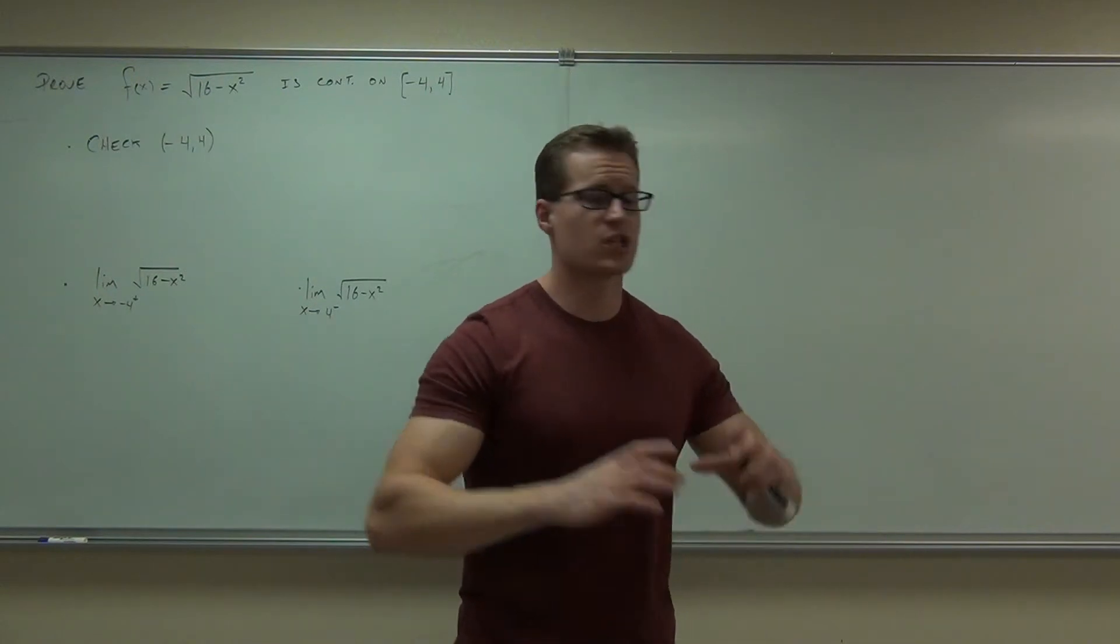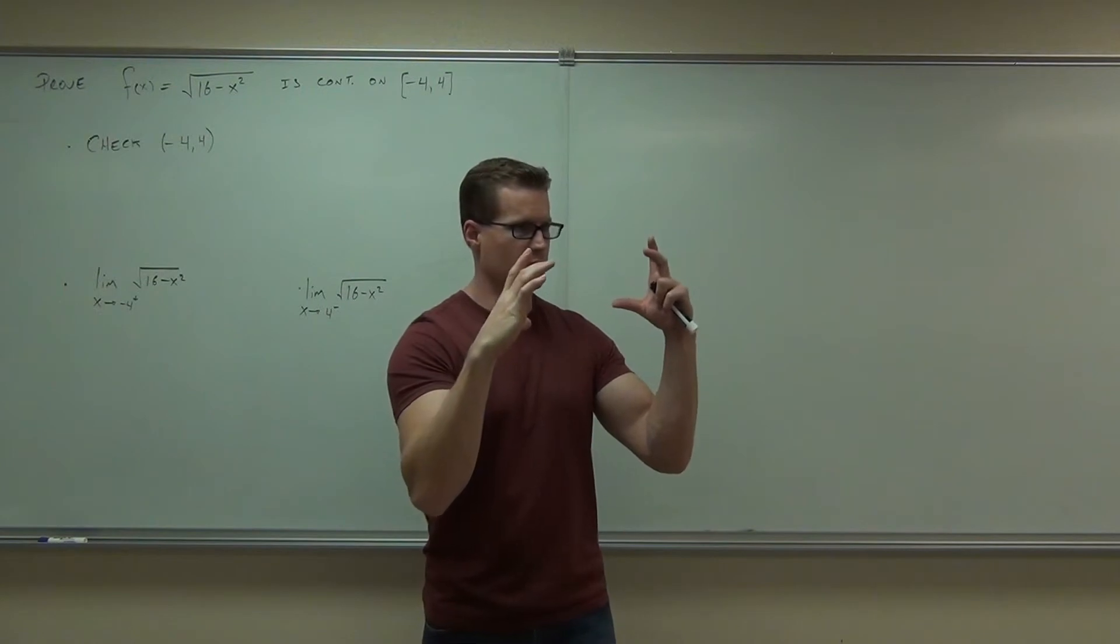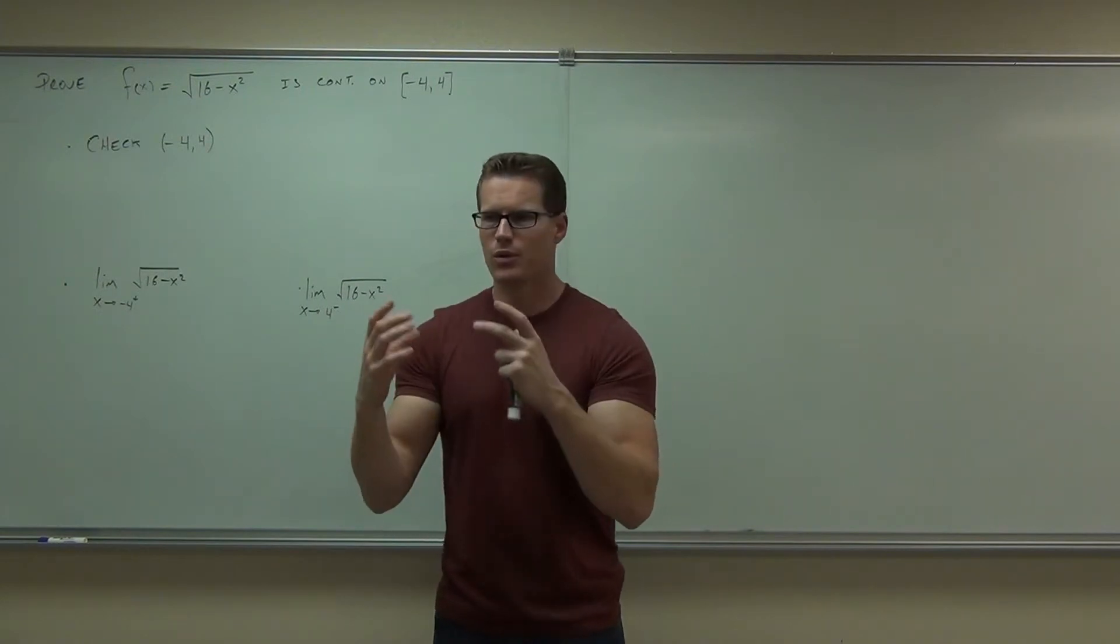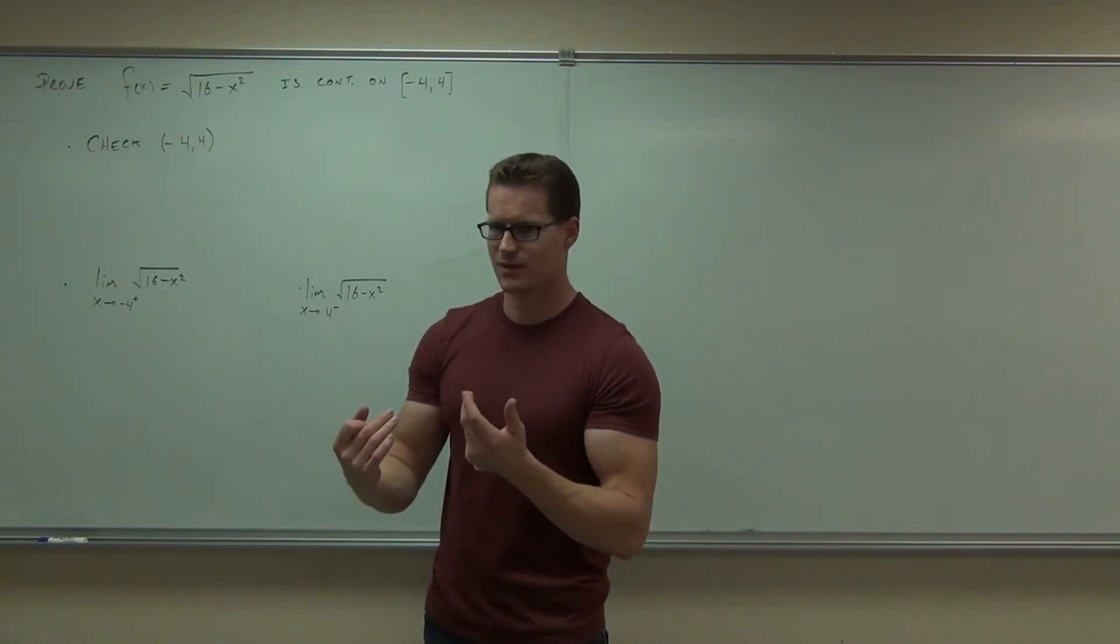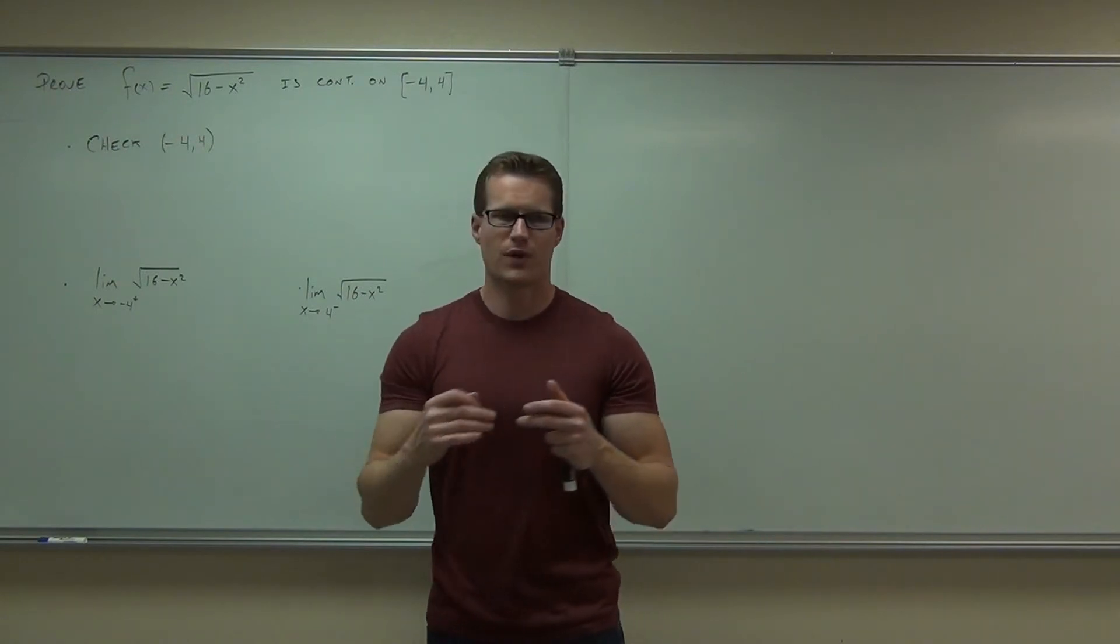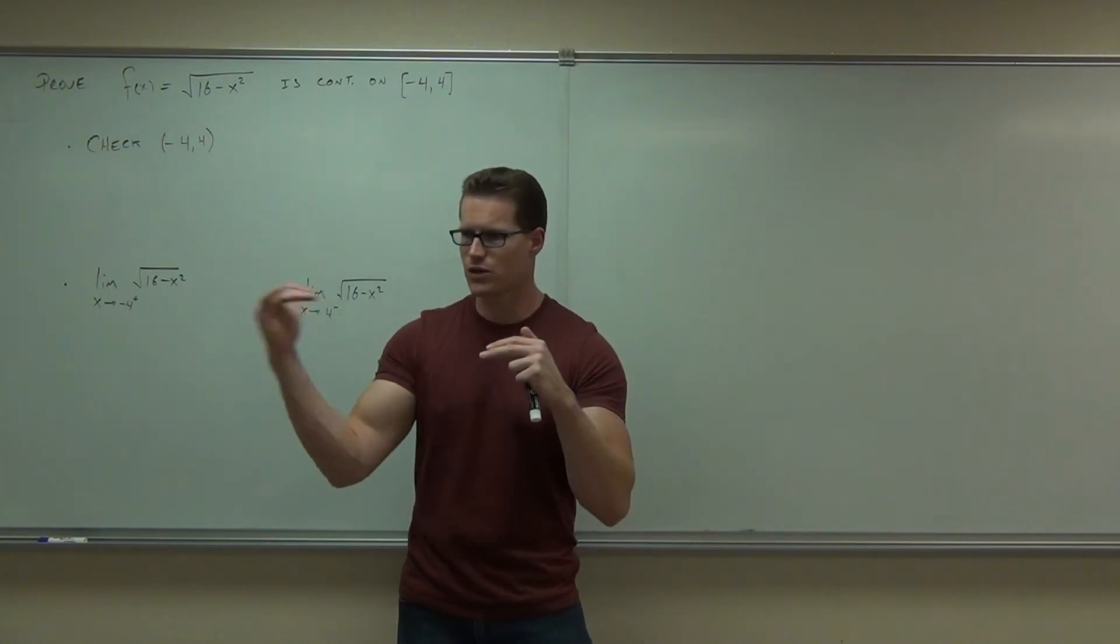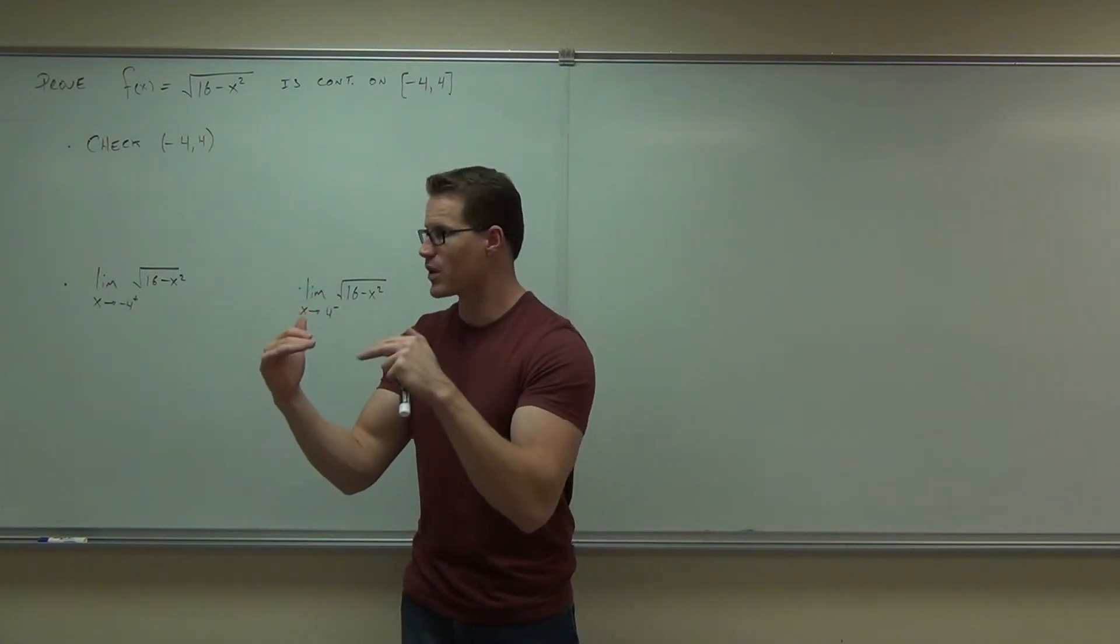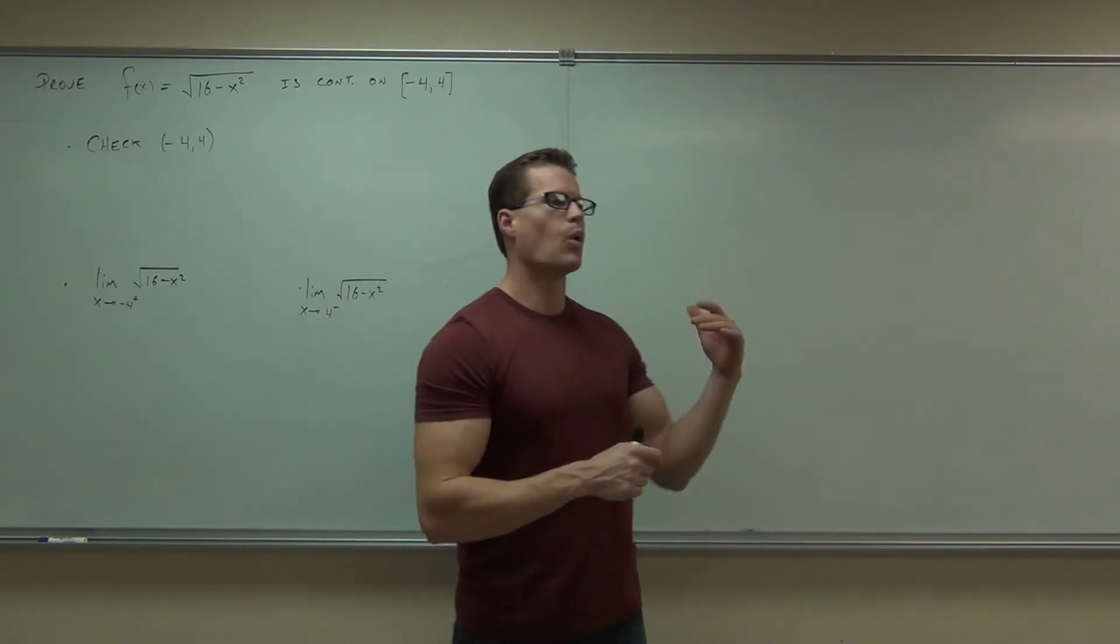We've got to check first the open interval to see if there's any holes or asymptotes on that open interval. The endpoints are a little different though because when we check continuity we're really checking limits, right? And at an endpoint a full on limit does not exist because there is no function coming from the left or maybe the right hand side in a certain case. So what we do at our endpoints is we check a one-sided limit.